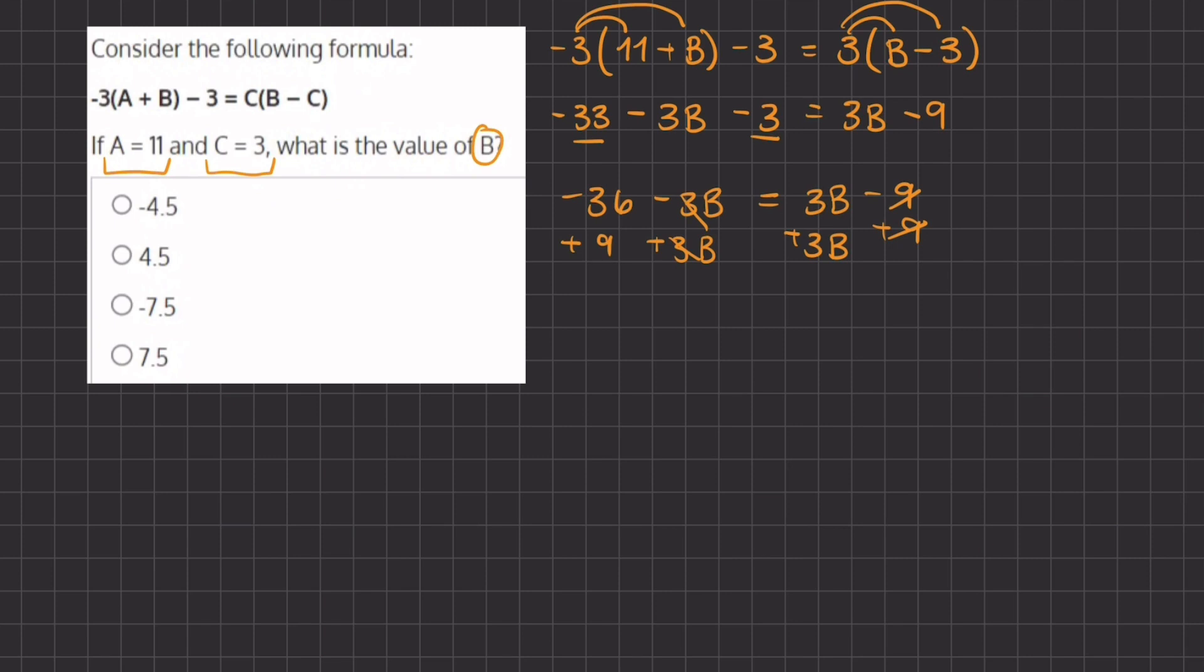So now negative 36 plus positive 9 we have negative 27 equals 3b plus 3b gives us 6b.